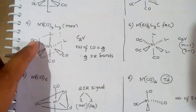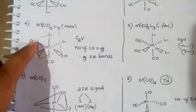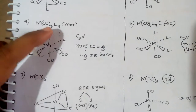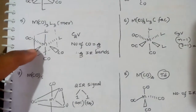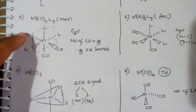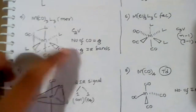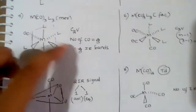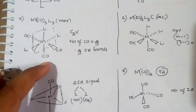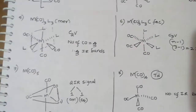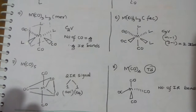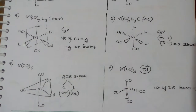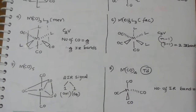I will tell you how to imagine this meridional complex. All three L groups are in an exactly inverted T shape, and the CO, CO, CO groups are in exactly another T shape. Point group is C2V. For C2V, number of IR bands equals number of CO groups. Therefore, it gives three IR bands.